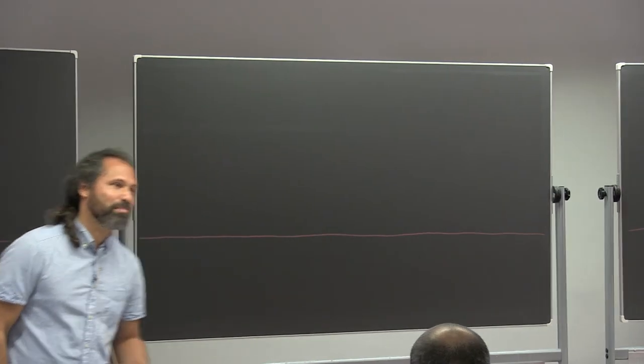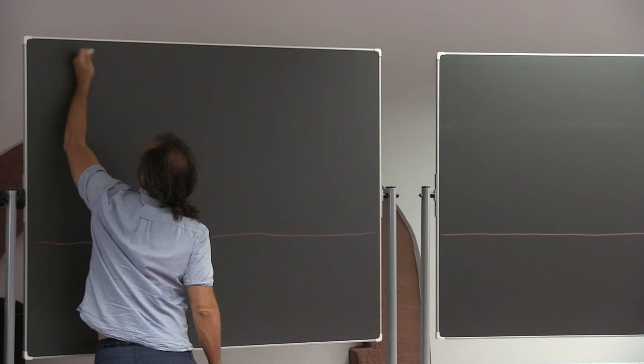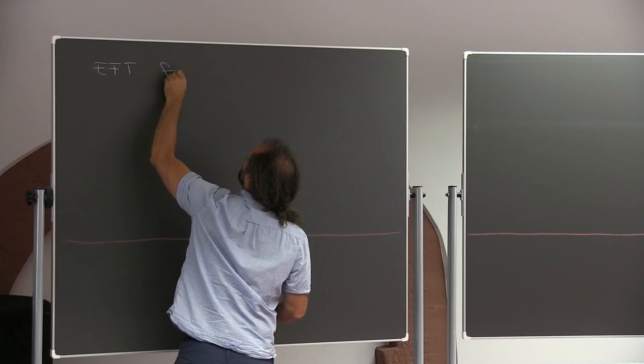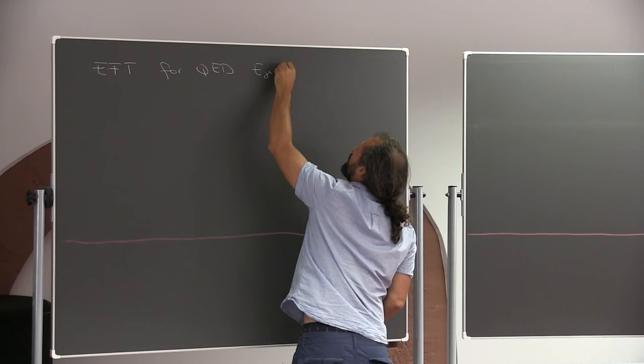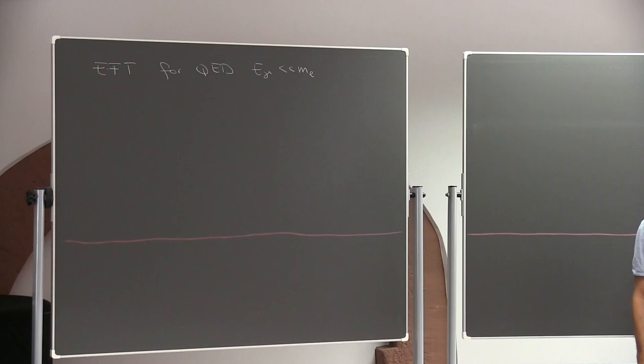Let's pick up where we stopped yesterday. We are discussing an effective theory for QED. QED is our full theory and we want to set up an effective field theory for photon energies which are much smaller than the electron energy. We already made quite a bit of progress.